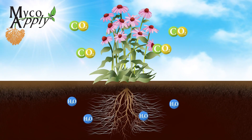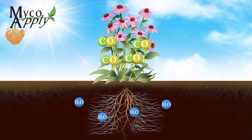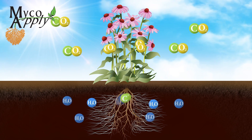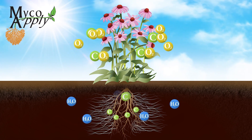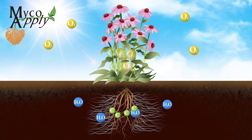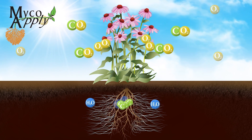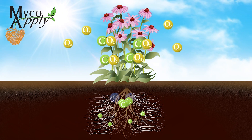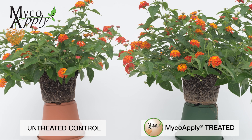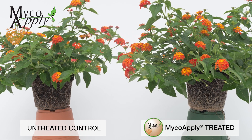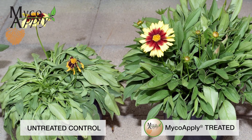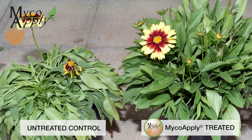The mycorrhizal symbiosis also increases the plant's effective water utilization and storage capability, allowing for improved tolerance to stress and greater resistance to drought.